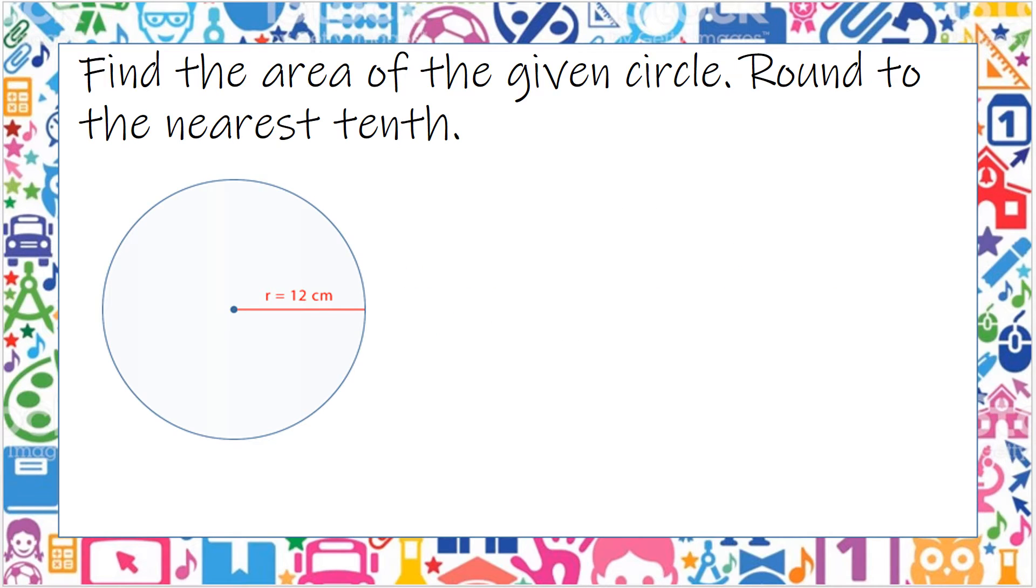So find the area of the given circle, round to the nearest tenth. The area of the circle is pi r squared. That means pi times the radius times the radius. So pi we're going to put as 3.14.